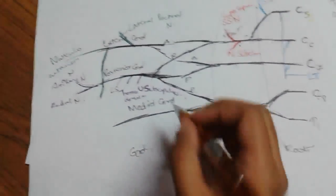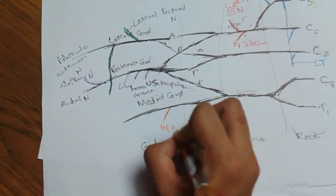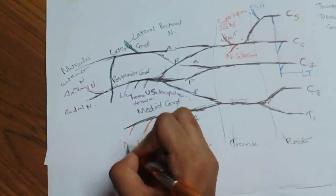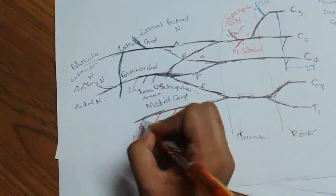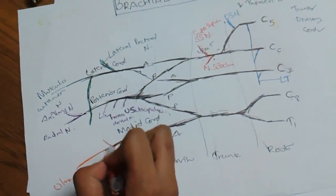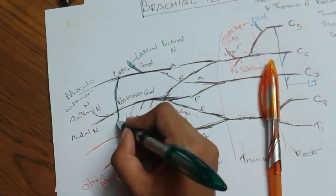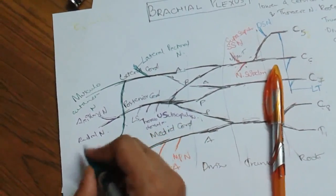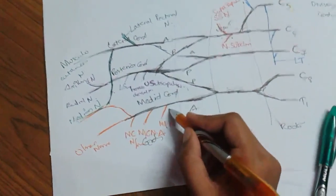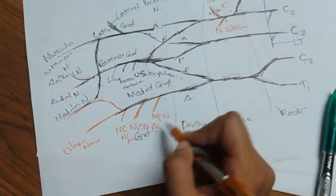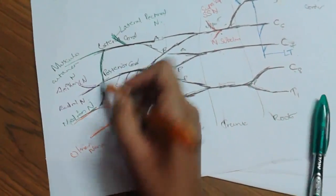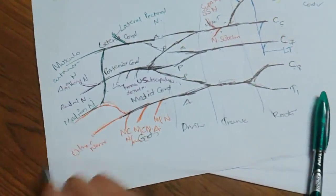From the medial cord, there are all M's. Branches are: medial pectoral nerve, medial cutaneous nerve of arm, medial cutaneous nerve of forearm. The continuation is the ulnar nerve. And there is a branch — the medial root of the median nerve — which combines with the lateral root of the median nerve from the lateral cord to form the median nerve.